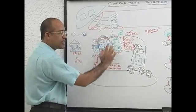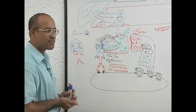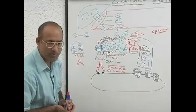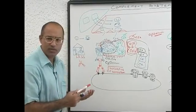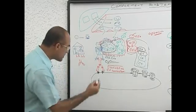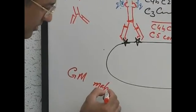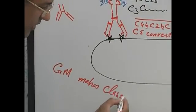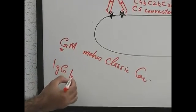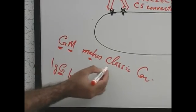This pathway of activating the complement system is called the classical pathway. One way to remember: the General Motors company makes classical cars — GM makes classic cars. So IgG and IgM activate the classical pathway.